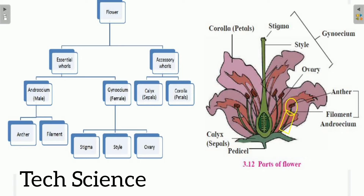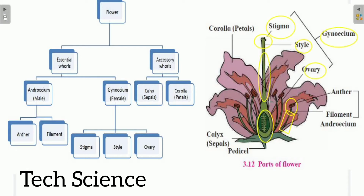The gynoecium is the female part and is divided into three parts: the first part is called stigma, the second part is called style, and the third part is called ovary. The stigma is at the top, the ovary is at the base, and the style is the tube-like structure connecting them.